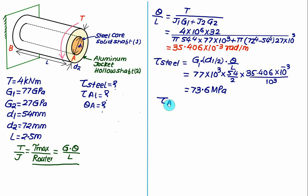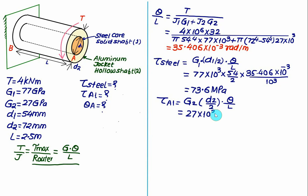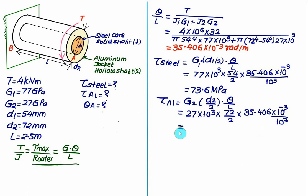For the aluminium jacket (hollow shaft), we use the outer radius d2/2: tau_2 = g2 × (d2/2) × (theta/l) = 27×10³ × (72/2) × 35.406×10⁻³ × (1/10³). Solving this gives the maximum shear stress in the aluminium ≈ 34.4 MPa.